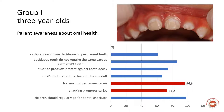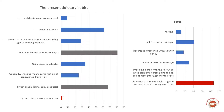As you can see, most parents know that sugar consumption and snacking between meals are very harmful. However, they add sugar to the meals of children, and nearly 70% of children eat sweet snacks such as pastries and dairy products.